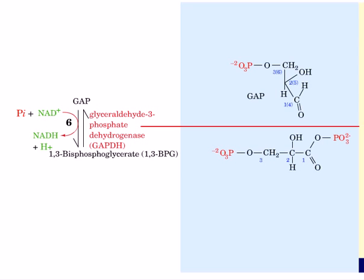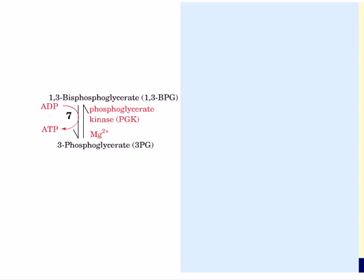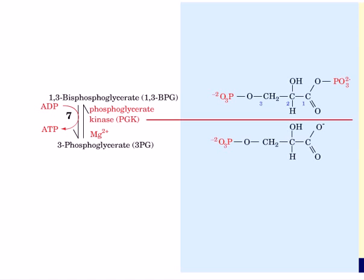The carbon-1 carbonyl of glyceraldehyde 3-phosphate is oxidized and subsequently phosphorylated to yield 1,3-bisphosphoglycerate. The seventh reaction is the conversion of 1,3-bisphosphoglycerate to 3-phosphoglycerate. This reaction is catalyzed by phosphoglycerate kinase and requires ADP. This is the step where ATP is generated by substrate-level phosphorylation — the C1 phosphate of 1,3-bisphosphoglycerate is transferred to ADP, generating 3-phosphoglycerate and ATP.